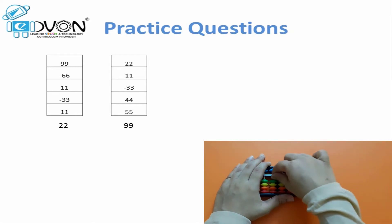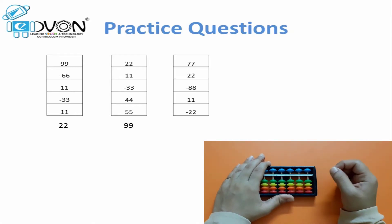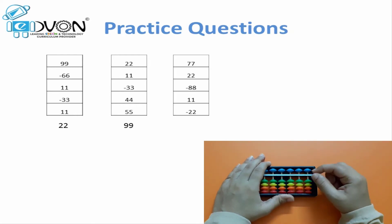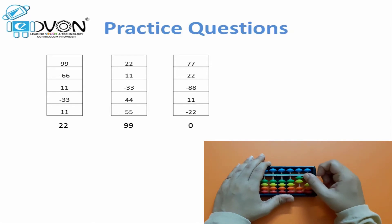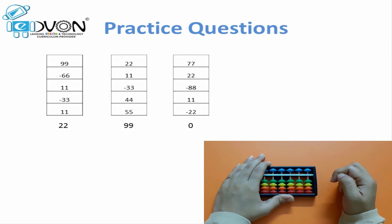Next question: 77 plus 22 minus 88 plus 11 minus 22. Answer: zero.